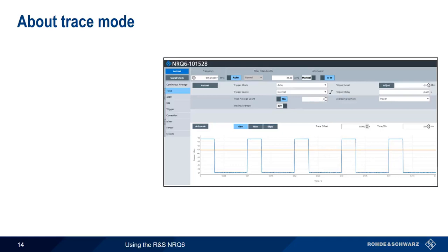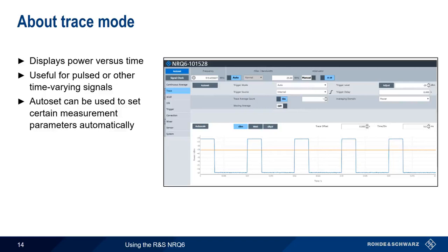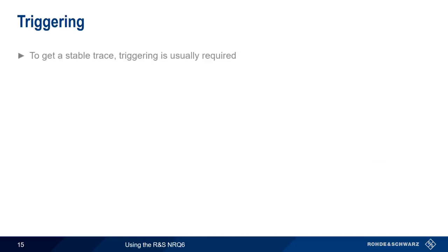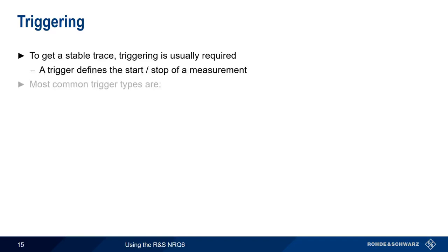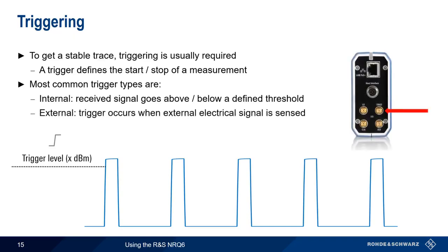The next measurement mode is Trace Mode, which displays power versus time. Trace Mode is particularly useful when looking at pulsed or other time-varying signals. Just as in the other measurement modes, Autoset can be used to automatically set some of the measurement parameters. Another feature, Autoscale, can be used to automatically size the power and time axes of the displayed trace. When working with Trace Mode, it's important to remember that in order to get a stable trace display, some sort of triggering is usually required. A trigger is a condition or stimulus used to define the start and/or stop of a measurement. The two most common trigger types are internal and external. An internal trigger occurs when the received signal crosses a user-defined threshold; an external trigger occurs when some external electrical signal is sensed, usually on a dedicated trigger connector. A missing or incorrectly configured trigger is the most common cause of problems when making trace measurements.